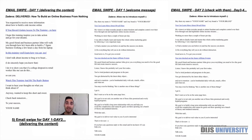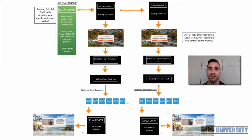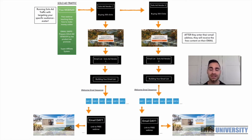Now let's look at the full flow from start to end. We're promoting a free webinar teaching people how to make money online. We have two solo ad vendors at the top; we buy 300 clicks from each. Each vendor writes the email swipe for their subscribers, and when subscribers click the link they're redirected to your squeeze page. There they enter their name and email address, which is automatically added to either email list one or email list two.